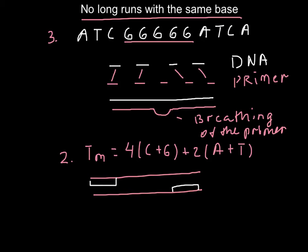The temperature of melting is when we have 50% of our DNA in the double-stranded form and 50% as single-stranded DNA — this is called the melting temperature.